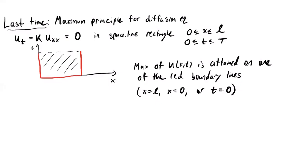You may be confused about where the line t equals zero comes from. Consider a scenario where initially at t equals zero there's no heat source — maybe you turn the oven on and it takes a little time for heating to start. At every future point the temperature is only going to increase, so the minimum temperature will be at the boundary point. There's a correspondence between the maximum and minimum principle that involves taking the negative of the solution. There's also a minimum principle, which says the same thing except you replace maximum by minimum.